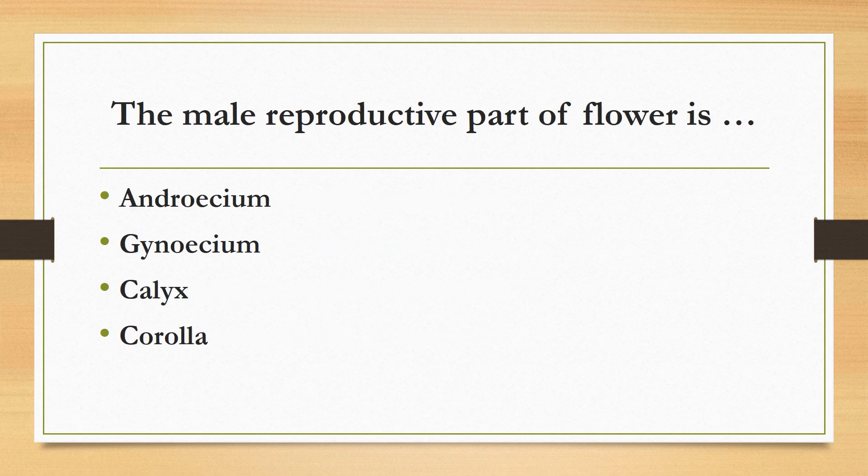The male reproductive part of a flower is: androecium, gynoecium, calyx, or corolla? The correct answer is androecium. The male reproductive part of the flower is the androecium, and the female reproductive part is the gynoecium.